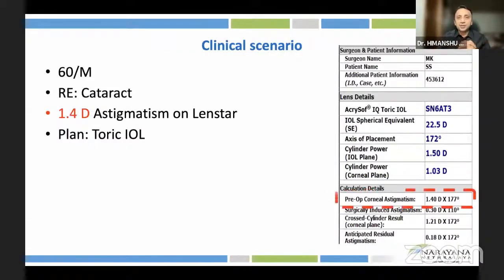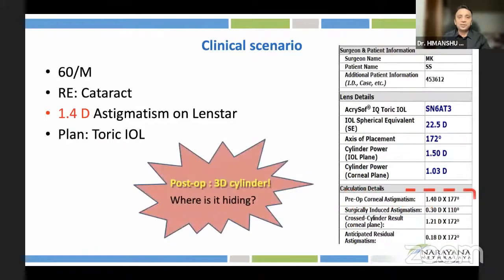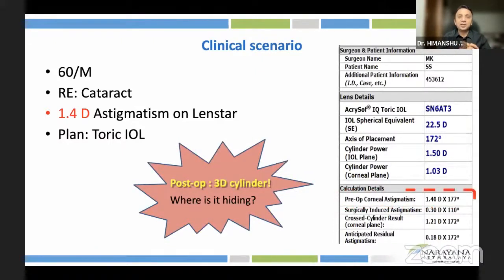A 60-year-old gentleman who has come for cataract surgery and the optical keratometer shows 1.4 diopters of astigmatism. A toric IOL is planned and performed. Post-operatively, unfortunately, you have 3 diopters of cylinder. Where was the cylinder hiding?